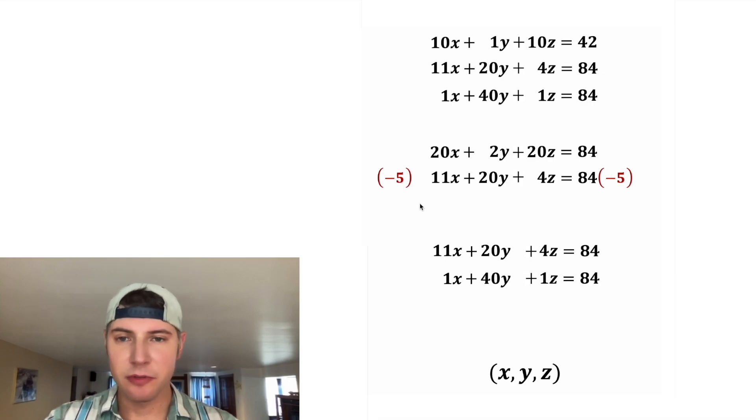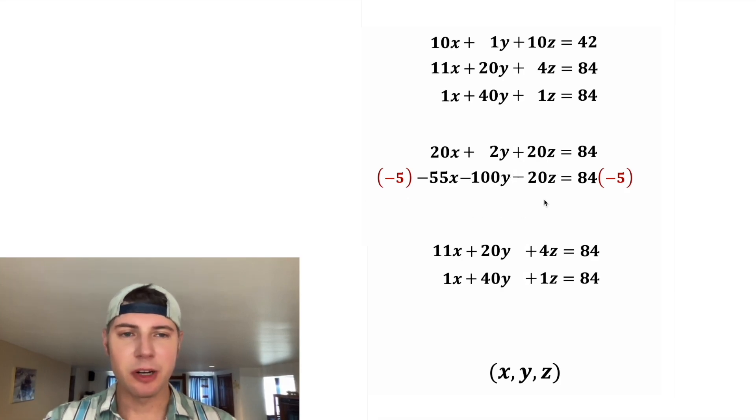And then the negative five will distribute. Negative five times 11 is negative 55x. This 20 will become negative 100 and the four will become negative 20. And then negative five times 84 is negative 420.